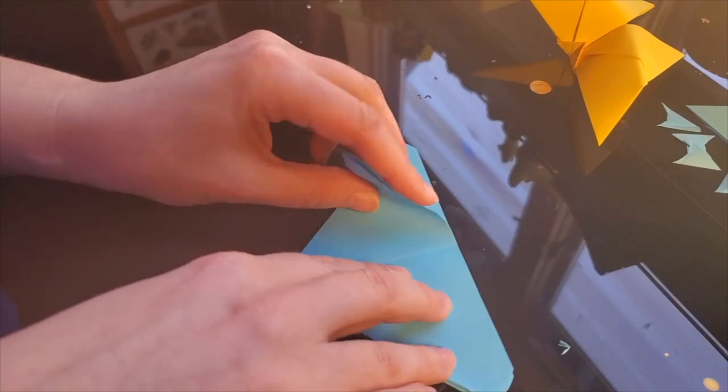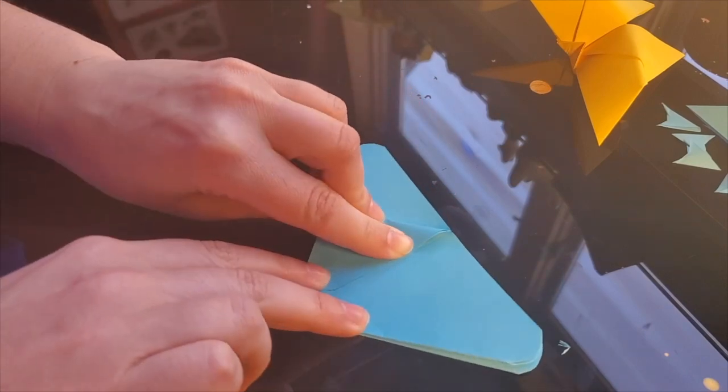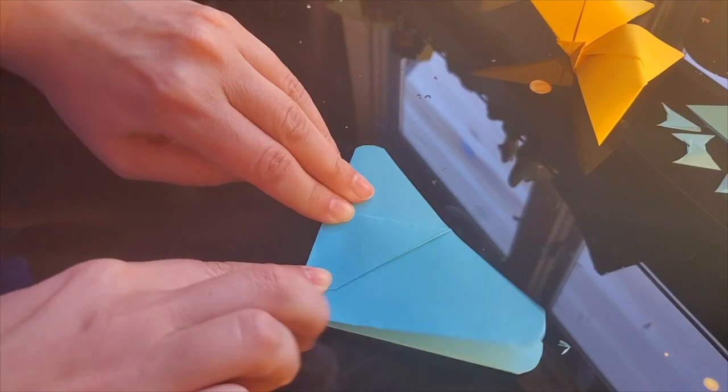Take the top half of the triangle and fold it down so it aligns with the center line. Repeat this on the other side.